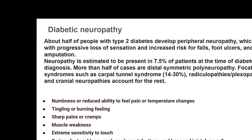Diabetic neuropathy is quite common, and you will be seeing plenty of patients. About half of the people with type 2 diabetes develop peripheral neuropathy, which comes with progressive loss of sensation, increased risk of falls, foot ulcers, and amputation. The most common clinical presentation is numbness — most patients feel as if there is a sponge covering their legs, and they cannot make out whether they have worn footwear or not.